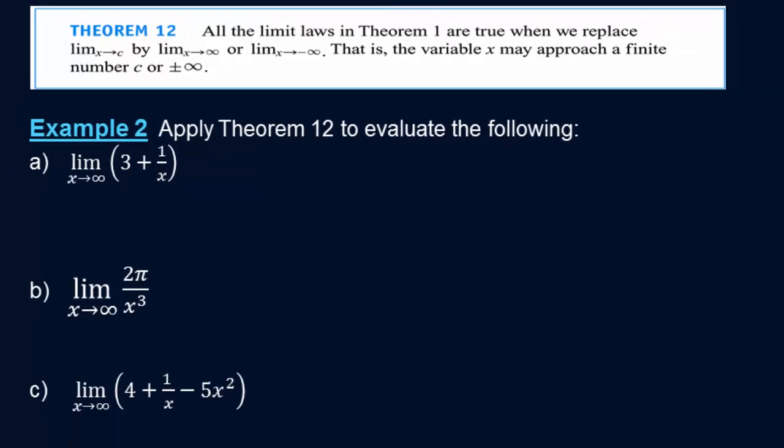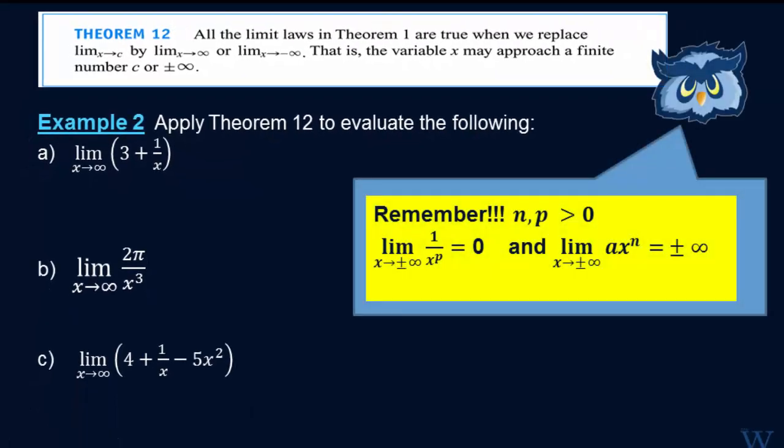So let's look at these following examples. But the thing we have to remember is that when we have a reciprocal, the limit is 0, as long as remember that p is positive. Same thing, if not, here n is also positive, so if we have a times x to the n, say 2x squared, 3x squared, negative 4x cubed, etc. Then the limit would either be plus or minus infinity, and that would be determined by whether n is odd or even, and whether a is positive or negative.